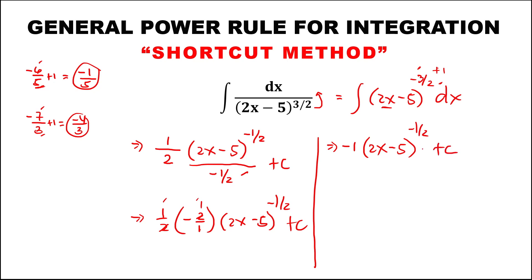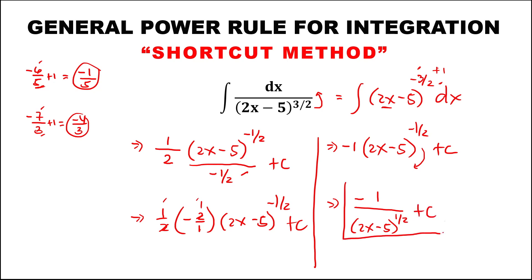To make the exponent positive, bring it down. So this equals negative 1 over (2x minus 5) to the power positive 1 half, plus C.